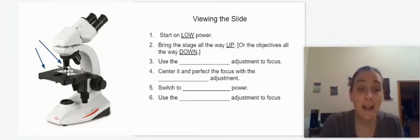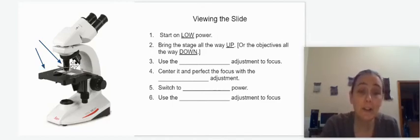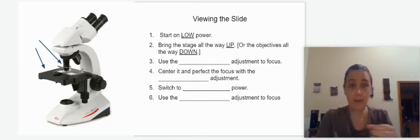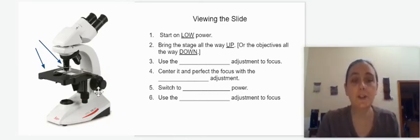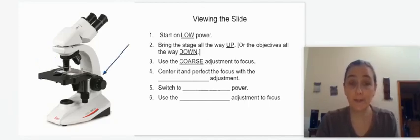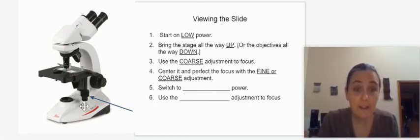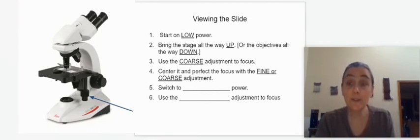Put the slide on the stage and start on low power. Bring the stage as close to the low power objective as you can — either the lens all the way down or the stage all the way up. Then look in the microscope and turn the coarse adjustment until you see something coming into focus. After that, try to get the image right in the center by moving the slide around. Some microscopes you move with your fingers; some have little knobs that move the slide forward and back or side to side very gradually.